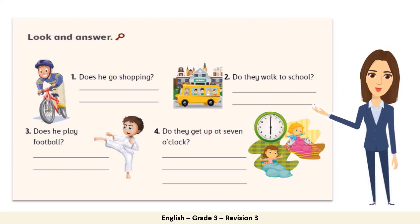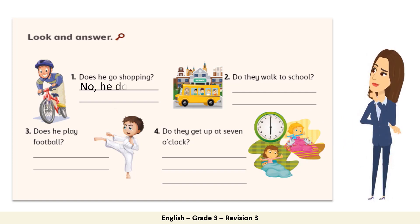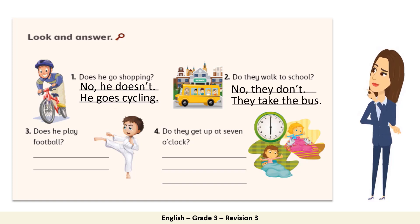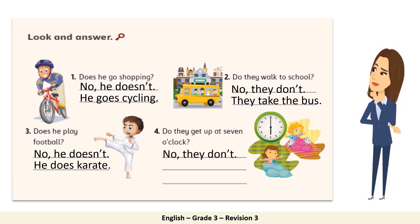Now let's look at the pictures and answer the questions. Number 1: Does he go shopping? No, he doesn't. He goes cycling. Number 2: Do they walk to school? No, they don't. They take the bus. Number 3: Does he play football? No, he doesn't. He does karate. Number 4: Do they get up at 7 o'clock? No, they don't. They get up at 6 o'clock. Excellent, everyone.